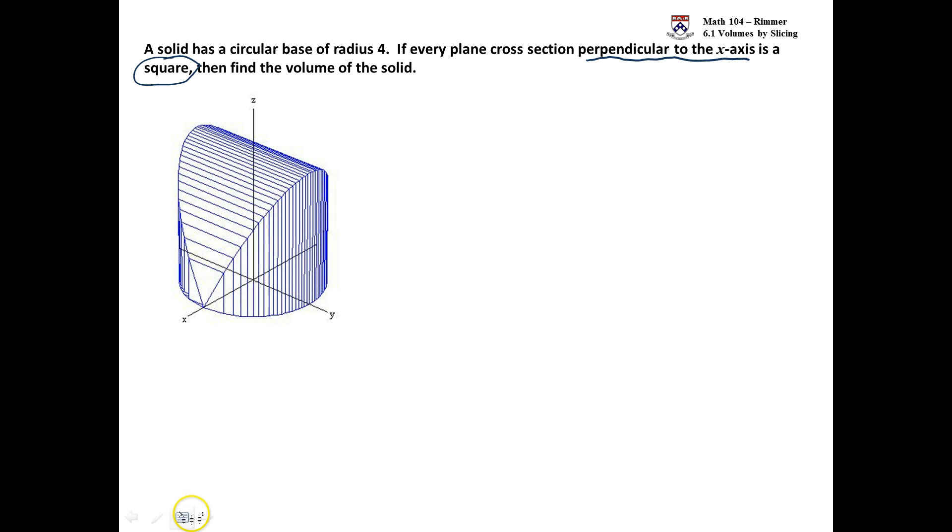What we have to do is figure out what variable we're integrating with respect to first. Since these cross-sections are perpendicular to the x-axis, we'll be integrating with respect to x. So, we'll need to draw what's going on in the xy-plane. We have the circle of radius 4. The blue represents the side length of a typical square. This will move from -4 to 4.